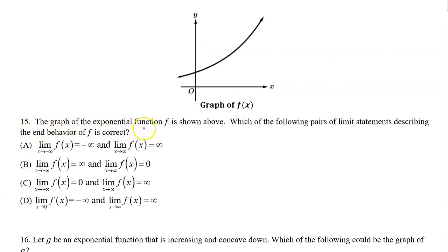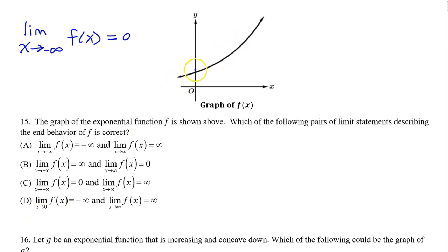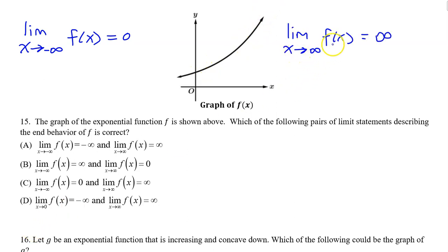Number fifteen: the graph of the exponential function f is shown above. Which of the following pairs of limit statements describing the end behavior of f is correct? As we go towards the left, this graph is approaching zero. So the limit as x approaches negative infinity is zero. As we go towards the right, f of x is going up — the limit as x approaches positive infinity of f of x equals infinity. Zero on the left, infinity on the right: the answer is C.